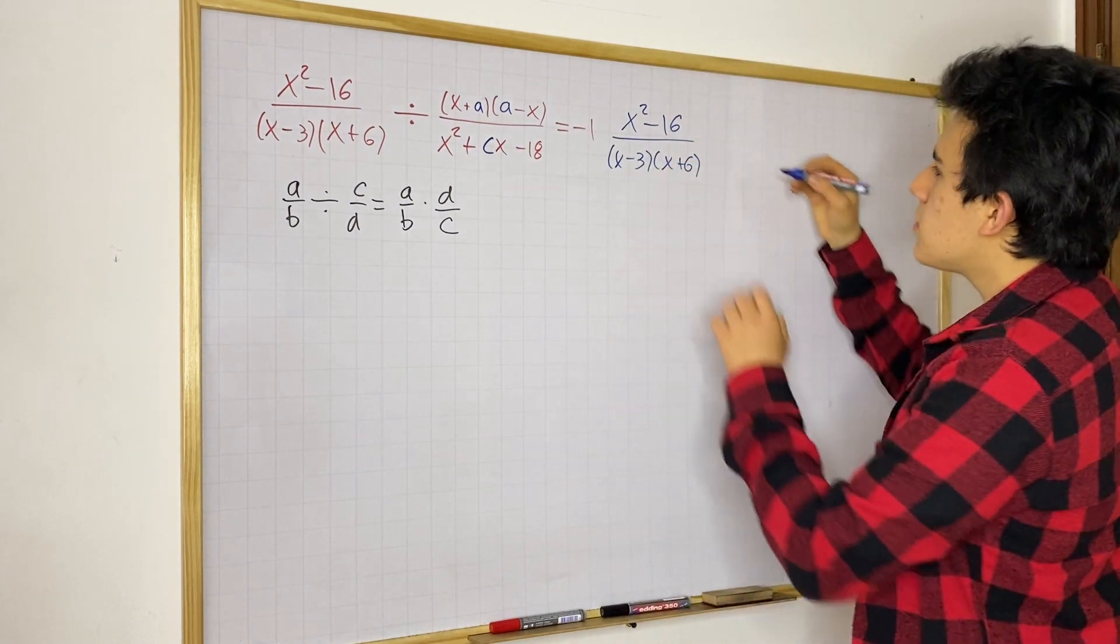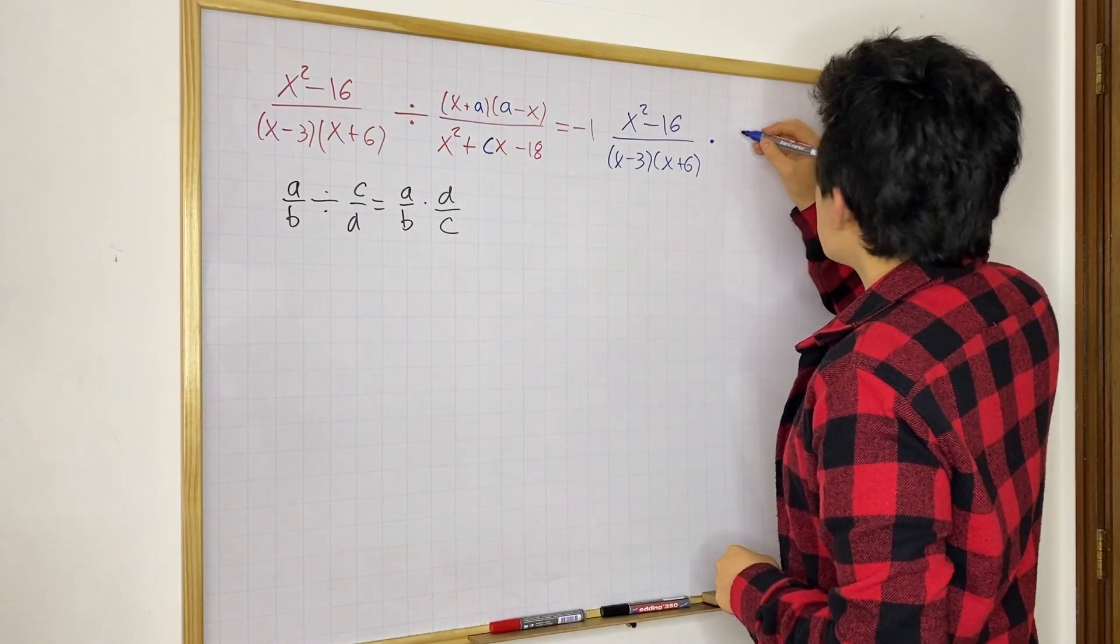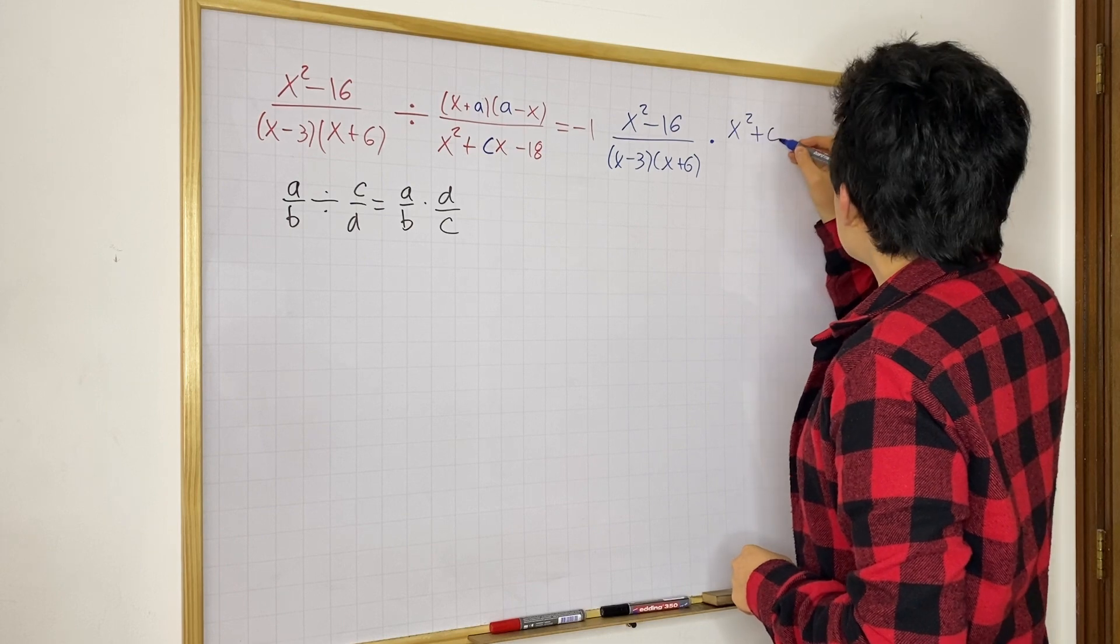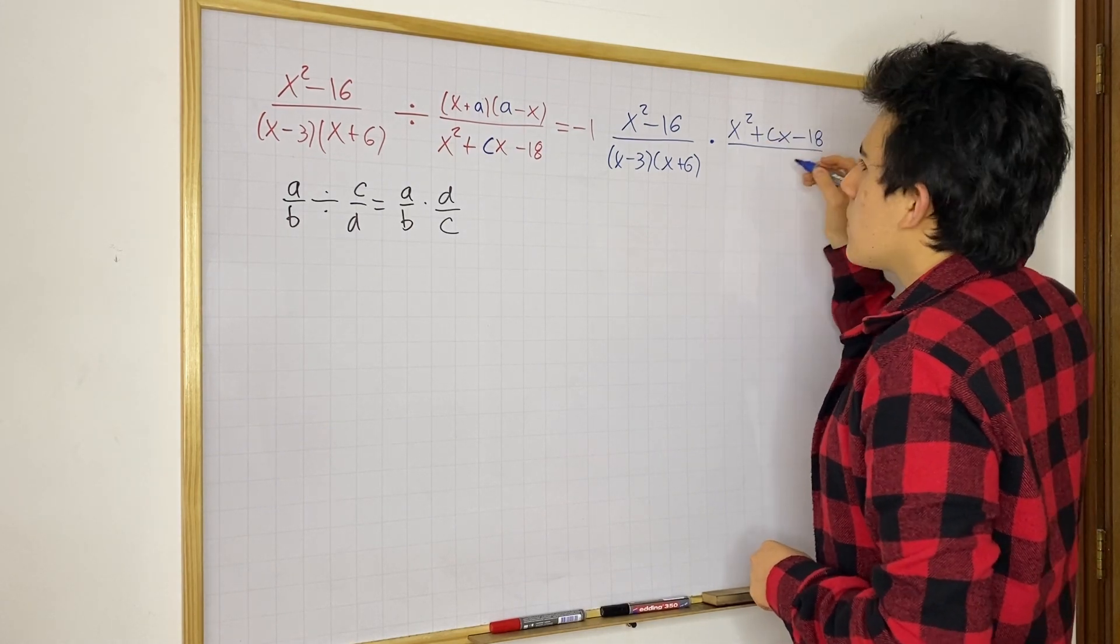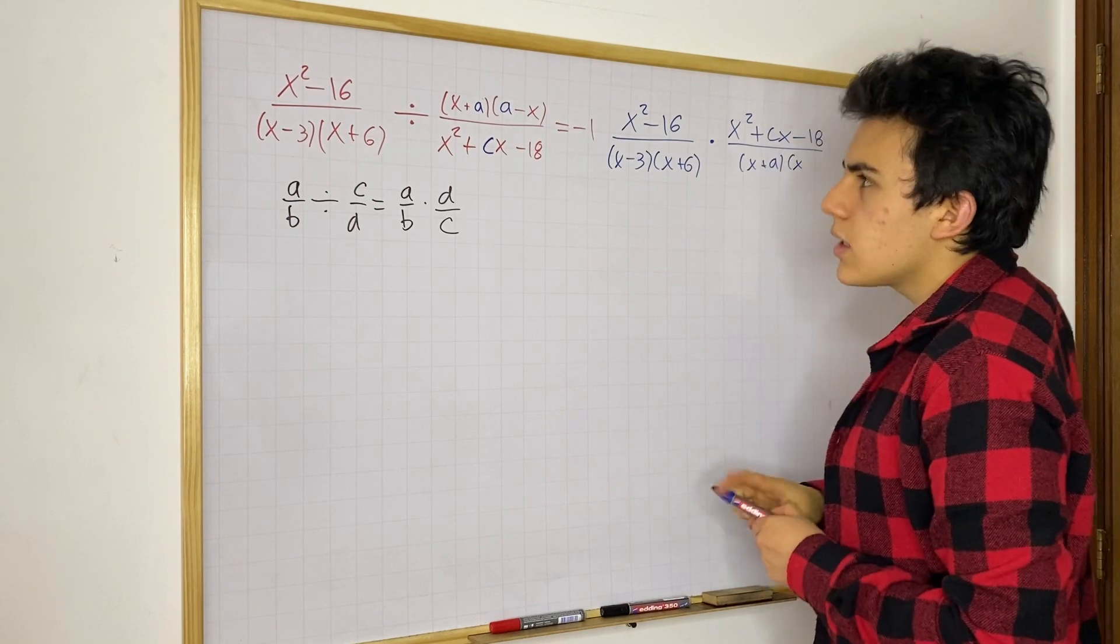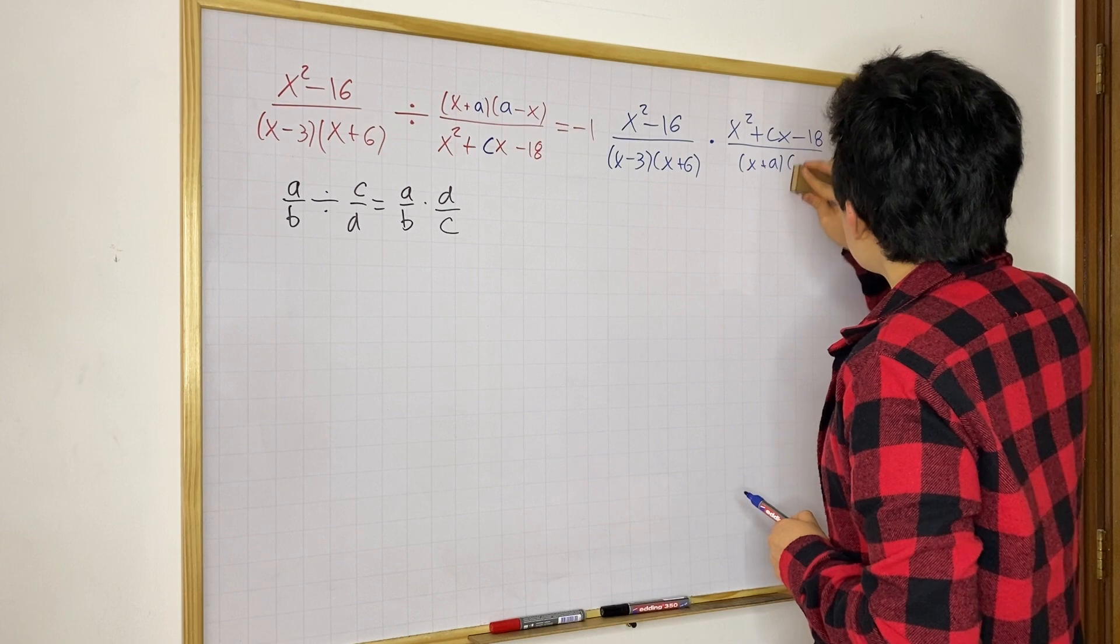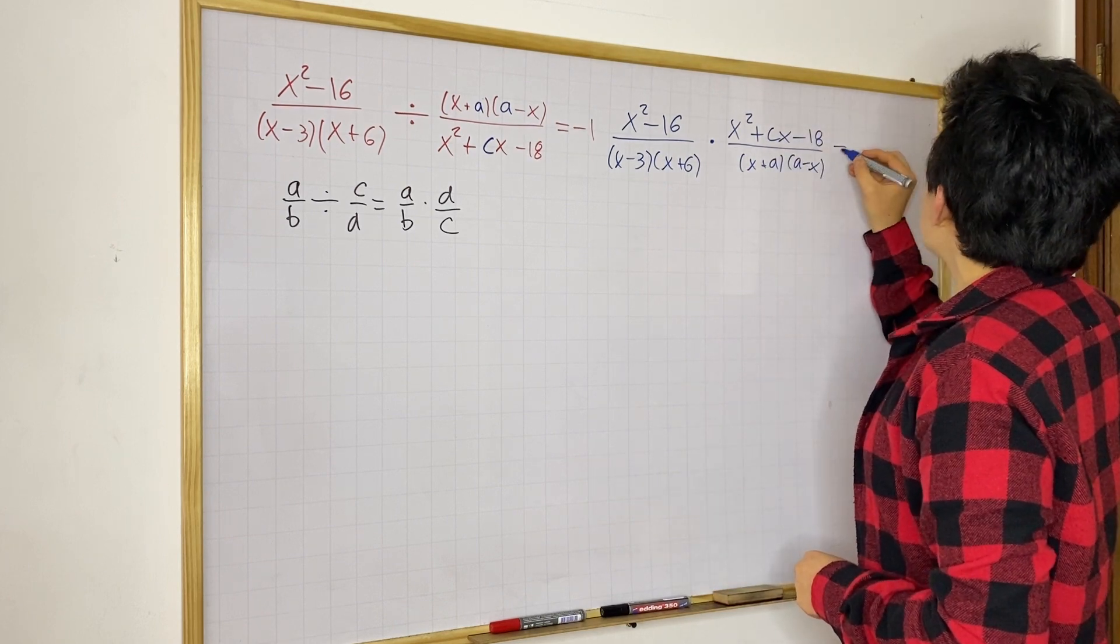So, X squared minus 16 over X minus 3 times X plus 6, and then multiply by the inverse of this fraction, which is going to be X squared plus CX minus 18 over X plus A times A minus X. And this is equal to negative 1.